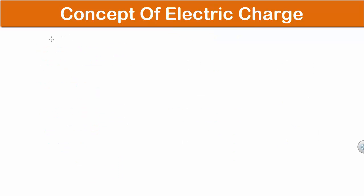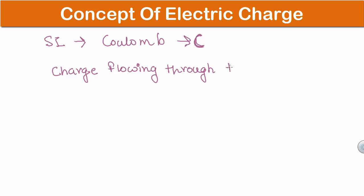Now SI unit of electric charge is coulomb, which is written as C, capital C. Now coulomb is the charge flowing through the wire in one second.